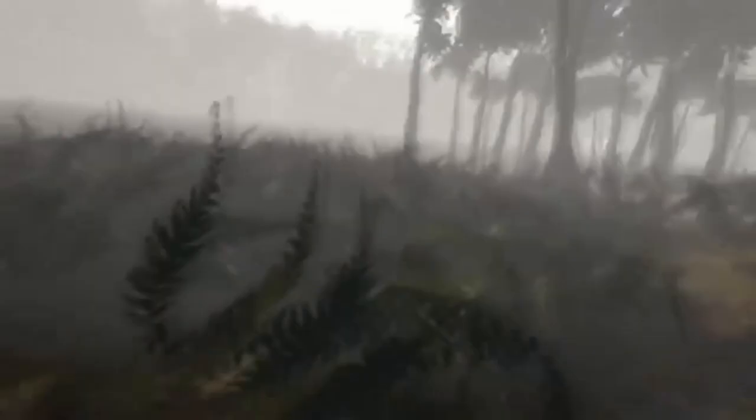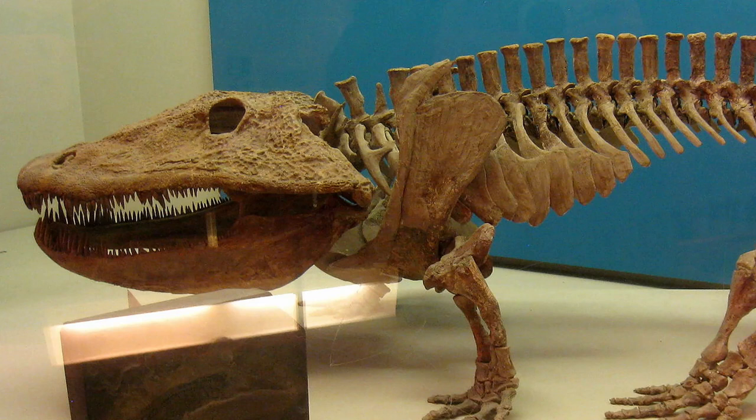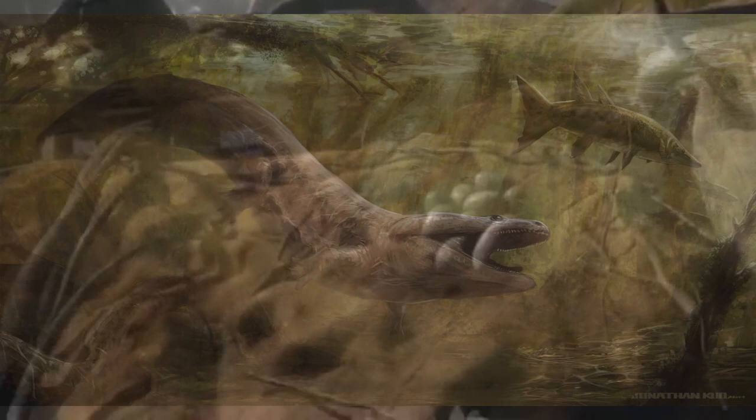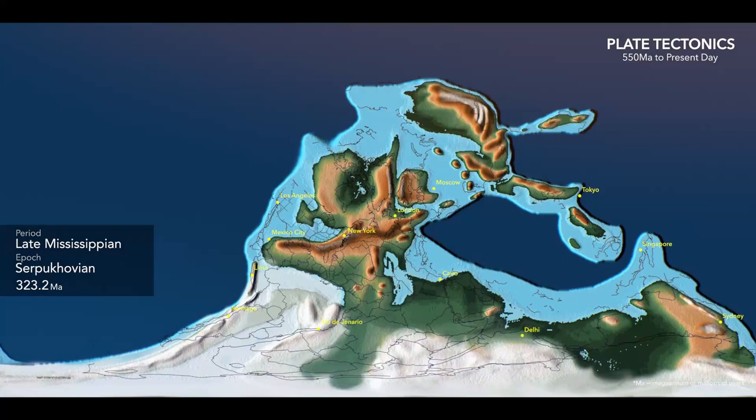We've also got these cool guys, the Tetrapods — some of the earliest vertebrates to fully adapt to life on land. Even though there's a lot of other cool things going on in the Carboniferous, we're going to make our way to the Permian now, going up the sandstone.